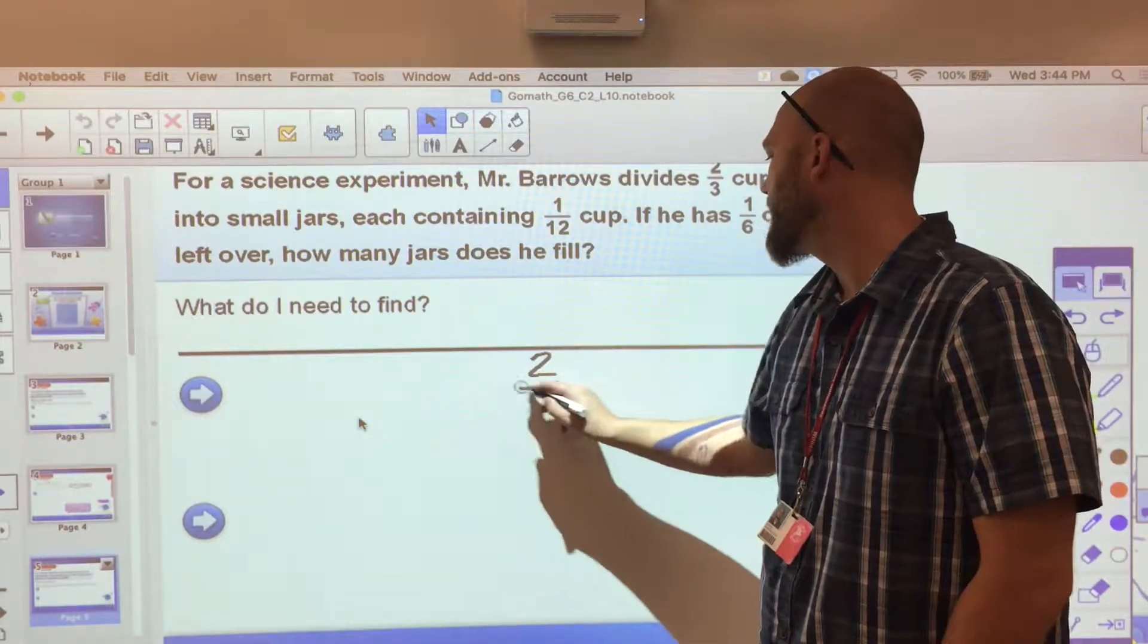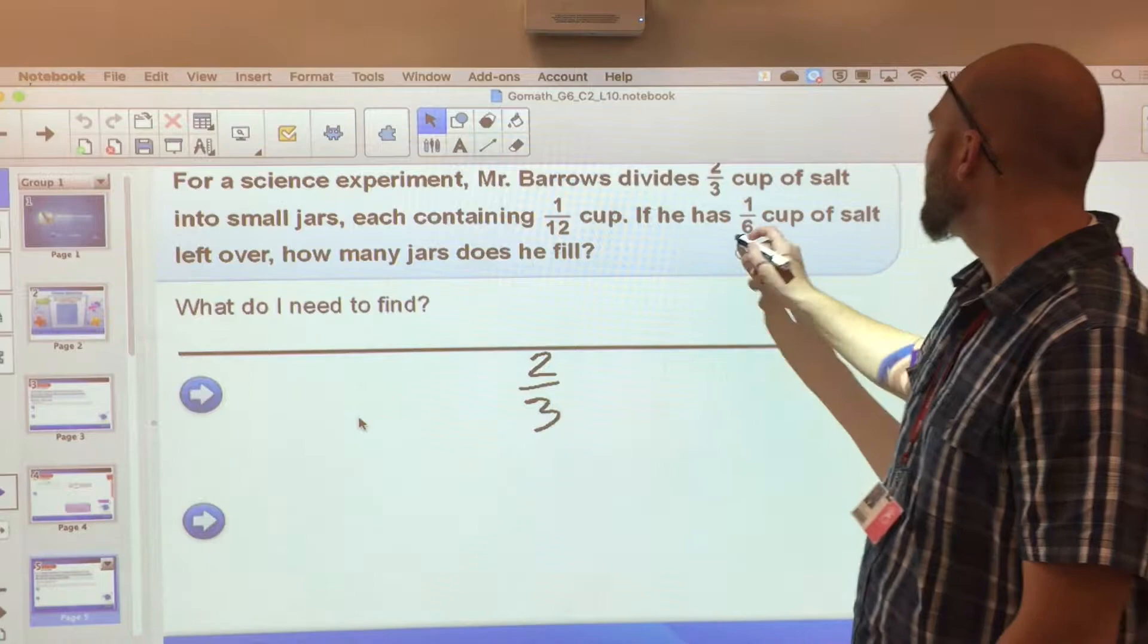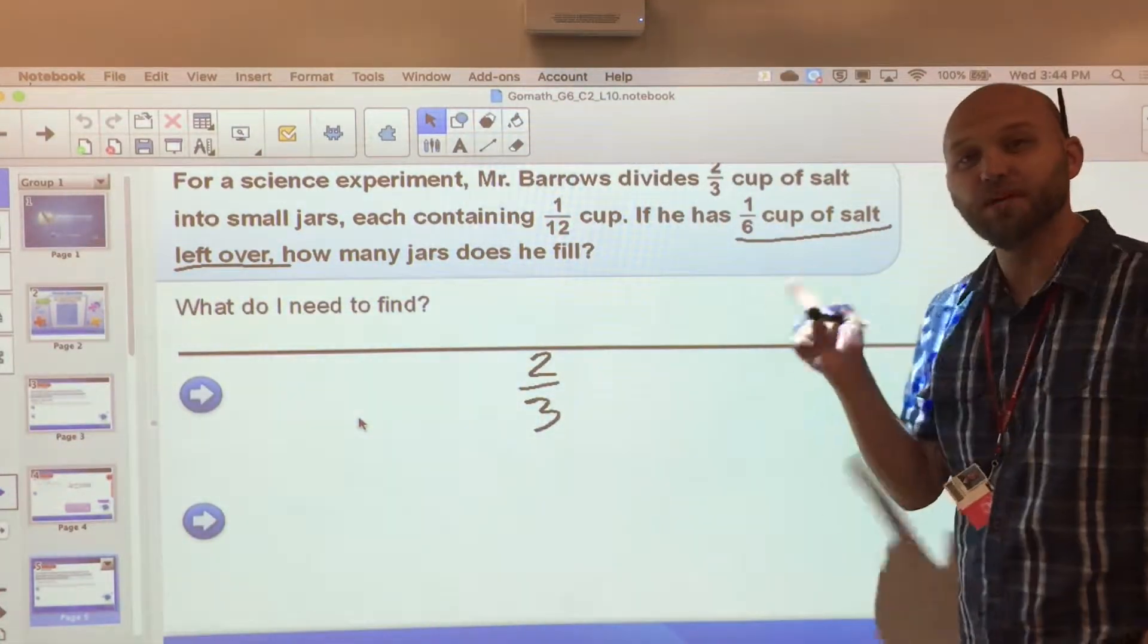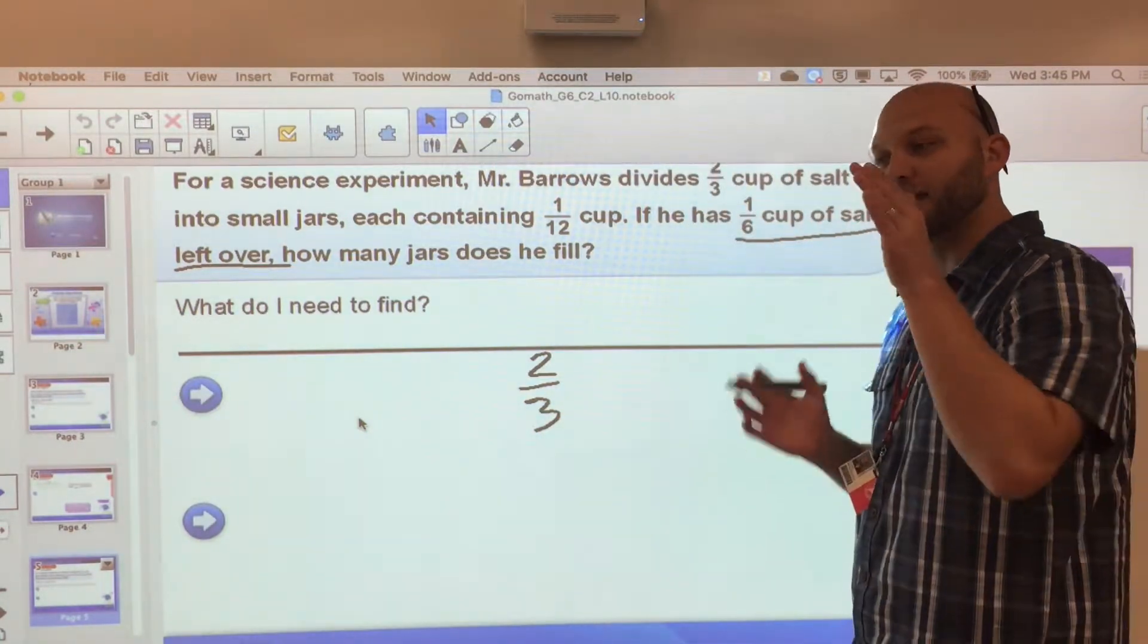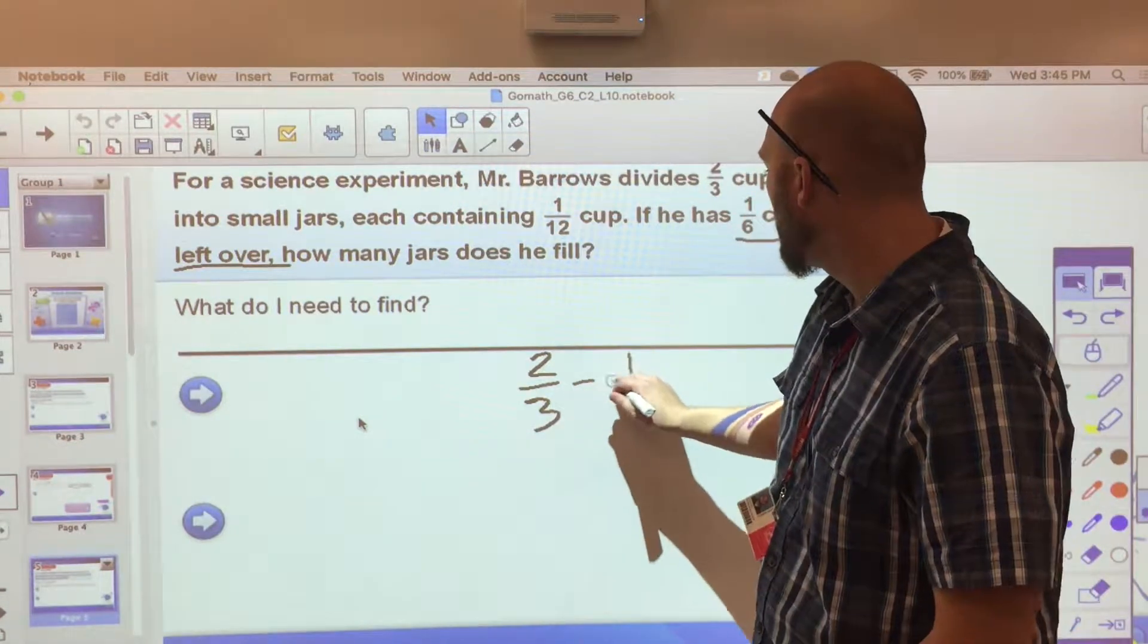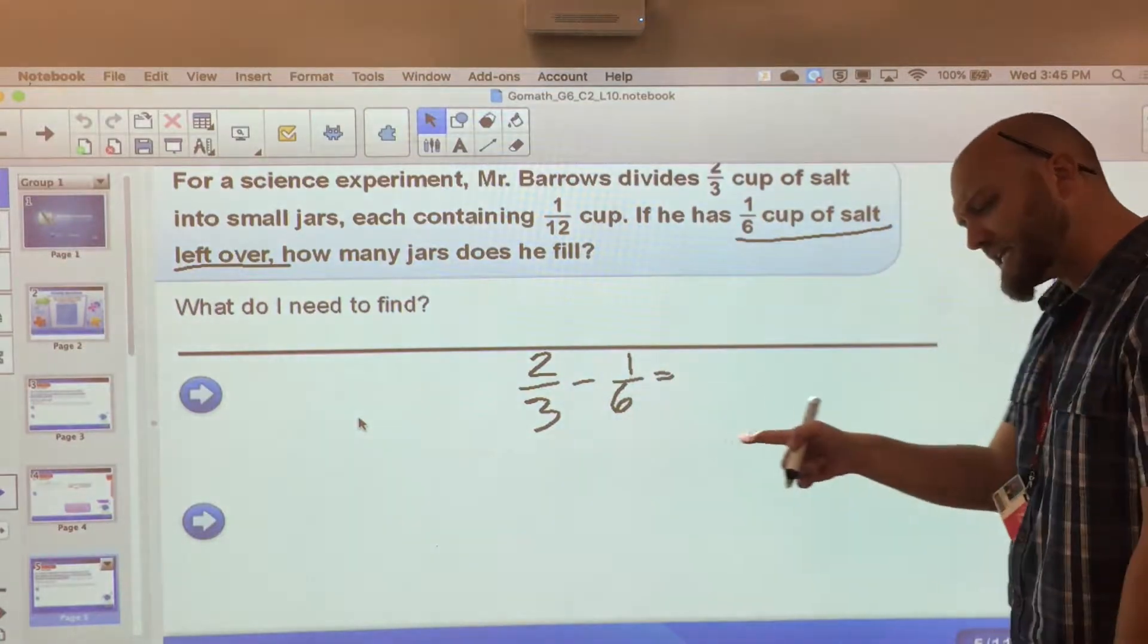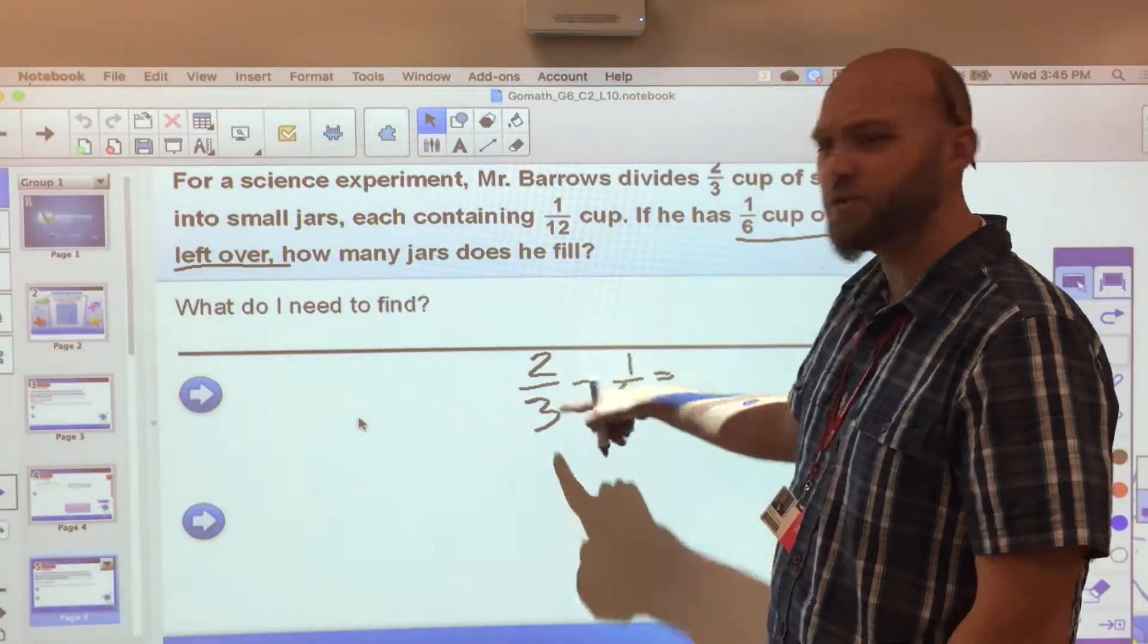I'm starting with two-thirds of a cup of salt and then I know that I have how much left over: I have one-sixth of a cup left over. So let's take that one-sixth and let's just set that aside so that I'm only focusing on what I distributed into the jars. So two-thirds minus one-sixth. As we said before, we're adding and subtracting with fractions so we need to have a common denominator.